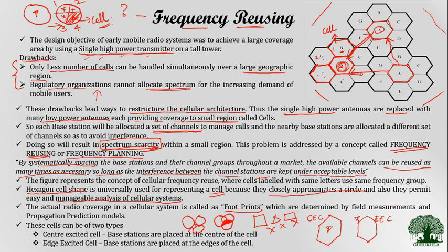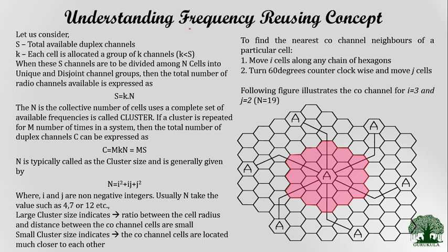Now let us further understand how exactly frequency reusing is done and how to find two cells using the same set of channels in a specified geographical region. To understand the frequency reusing concept, let us take two variables. S is the total available duplex channels, and K is the number of channels allocated to each cell. Obviously, K should be less than S. When these S channels are divided among N cells, the expression for channel availability is: S = K × N. N is the collective measure of cells that use a complete set of available frequencies, which we call a cluster.